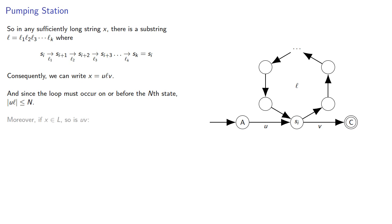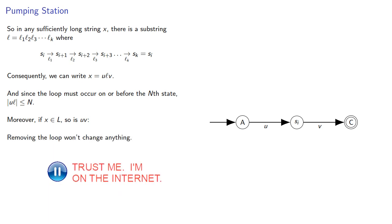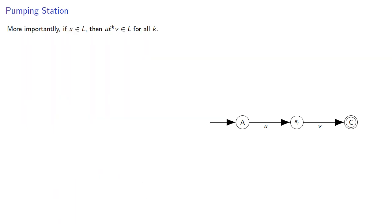Moreover, if our original string is in L, we can drop out the middle, uv is also in L because removing the loop won't change anything. And more importantly, if our string is in L, then repeating the loop as many times as we want will also give us a string in L.